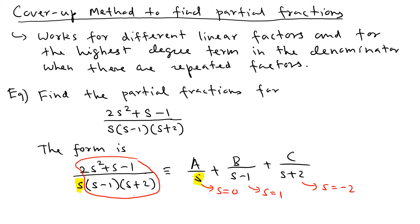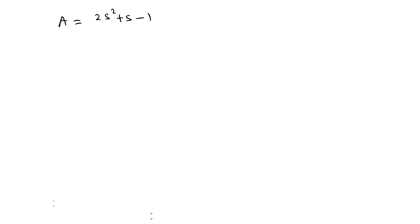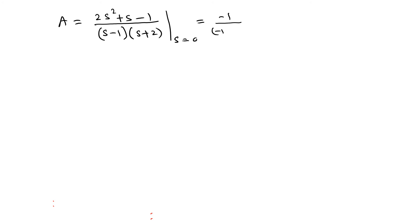To find A: ignore the s factor and evaluate (2s² + s - 1) over (s - 1)(s + 2) at s = 0. You get -1 over (-1)(2), which is -1 over -2, which equals one half.